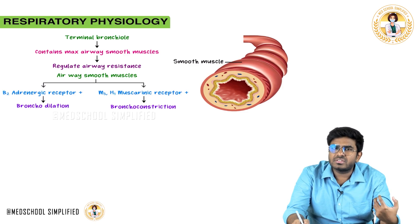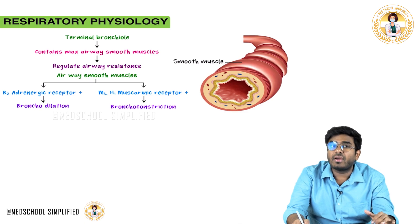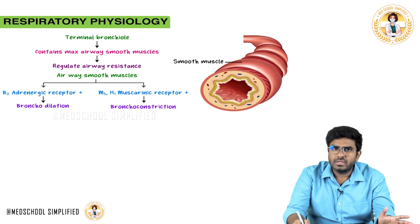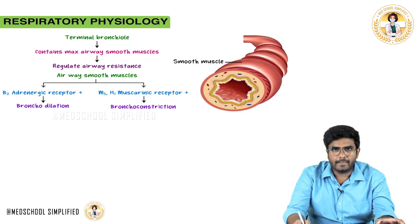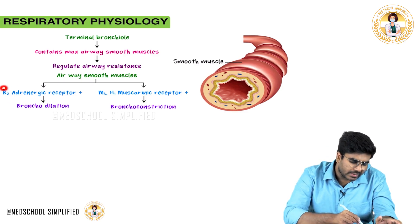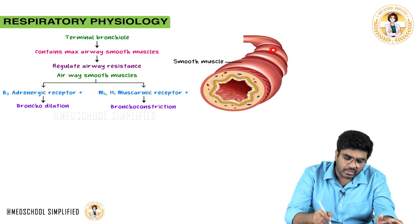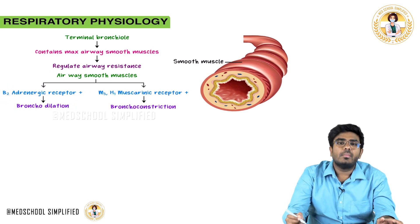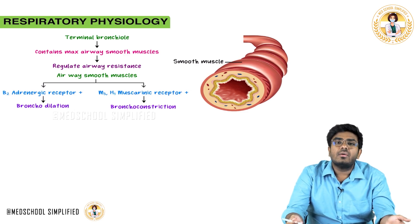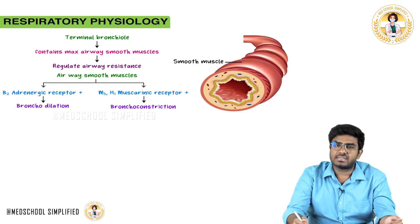In fight-or-flight reactions, you need more oxygen, so bronchodilation must happen. That is why the receptor on bronchioles is the beta-2 adrenergic receptor — stimulation of beta-2 causes bronchodilation, allowing more oxygen to flow into the respiratory system.